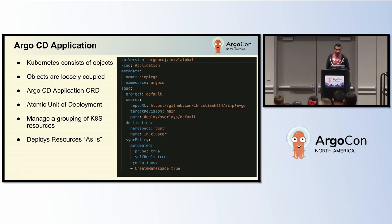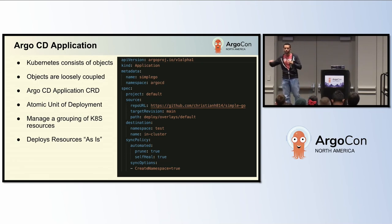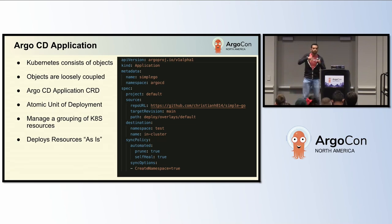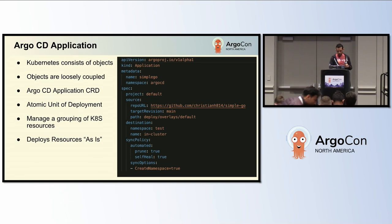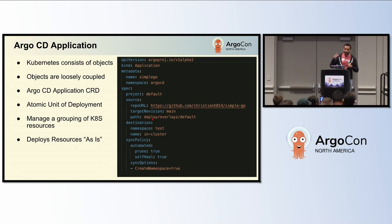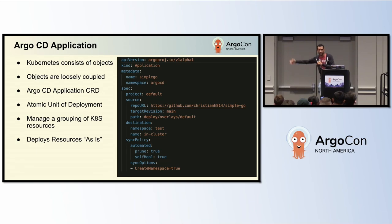By default, the Argo CD application — if you just install Argo without any options, whether via helm install or kubectl apply of the Argo CD manifests — will deploy those manifests as-is, as it finds them in your Git repo. For instance, you have your repo URL, target revision, and the path where your Kubernetes manifests live. The way it finds them under deploy overlays default is the way it gets deployed to that destination.